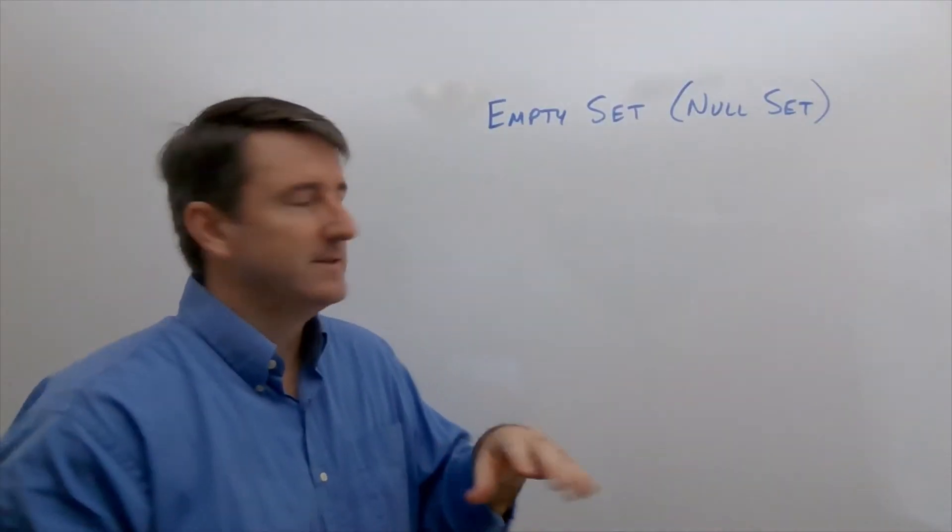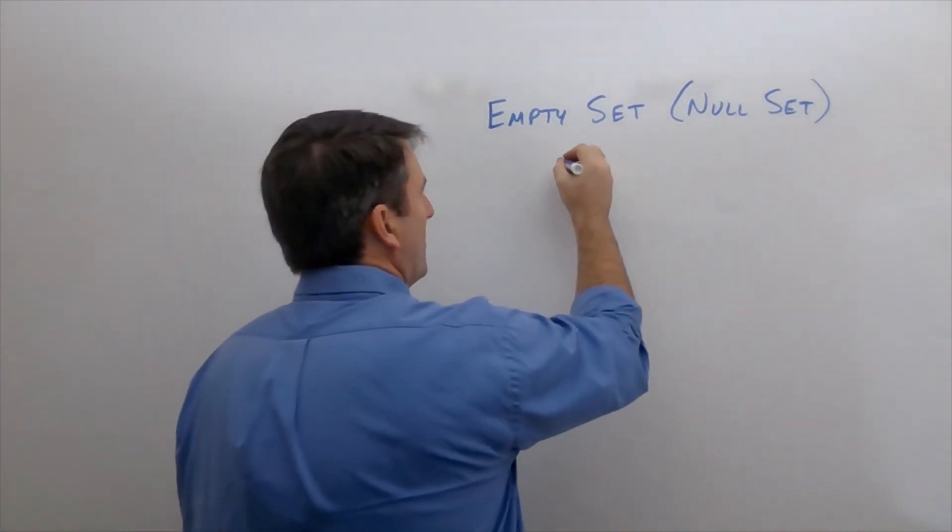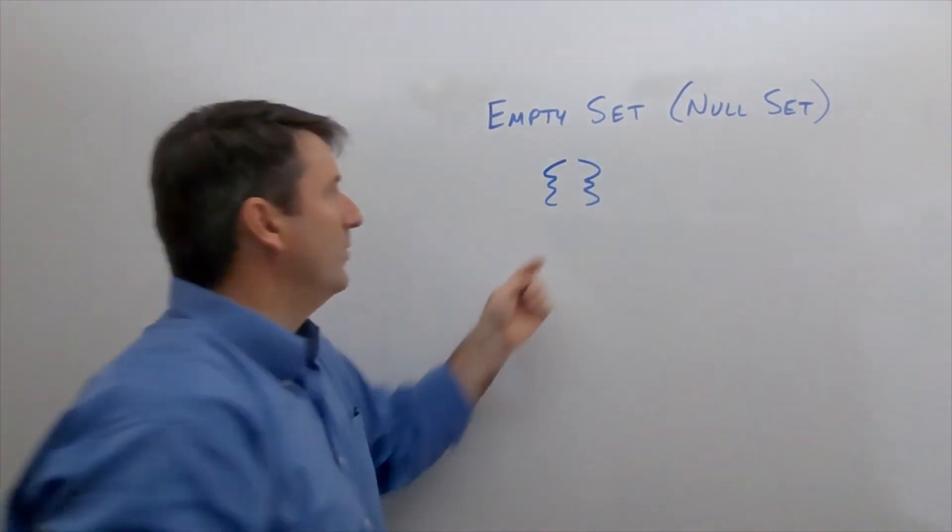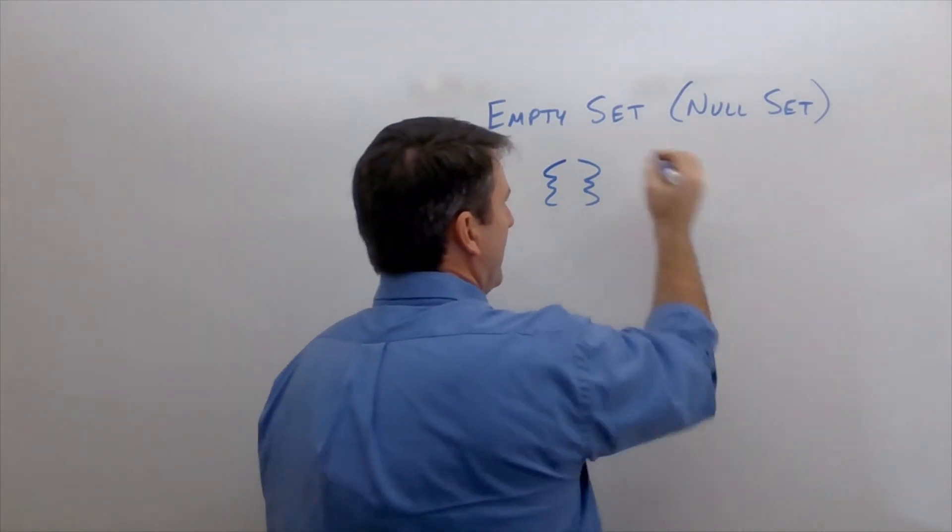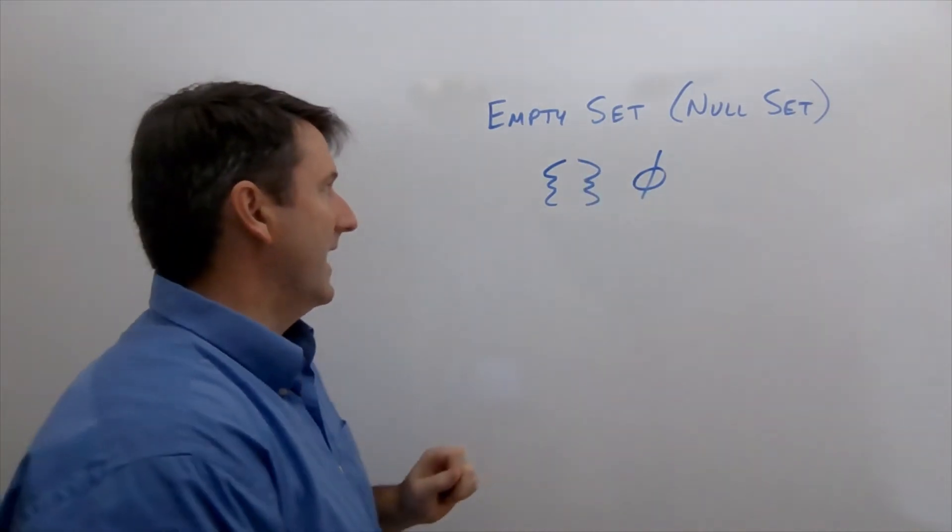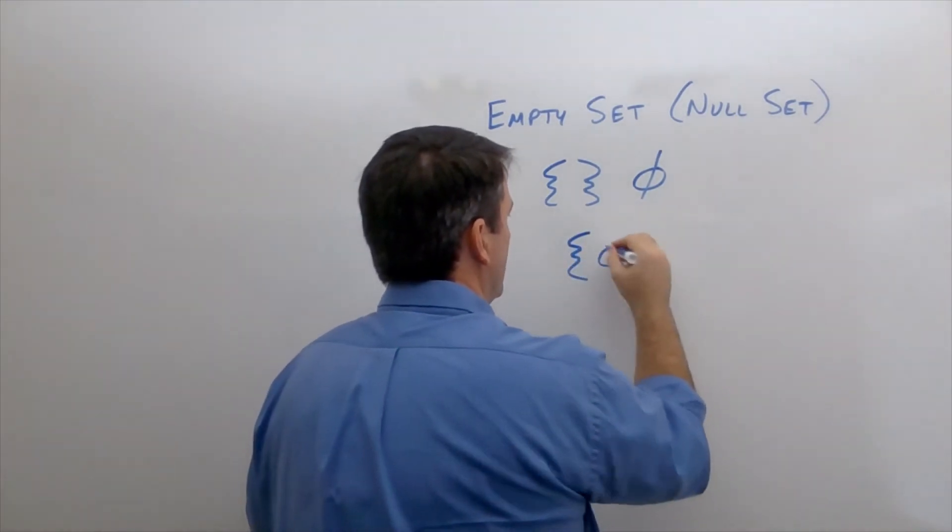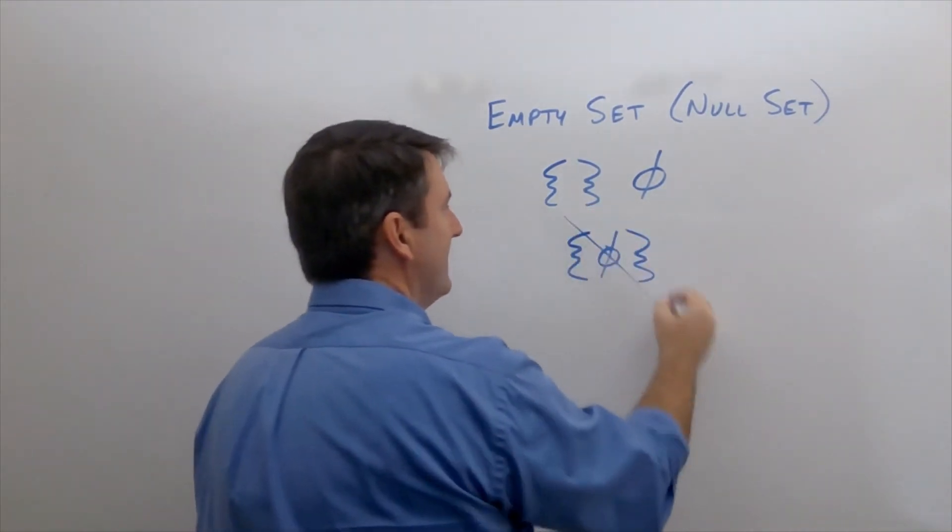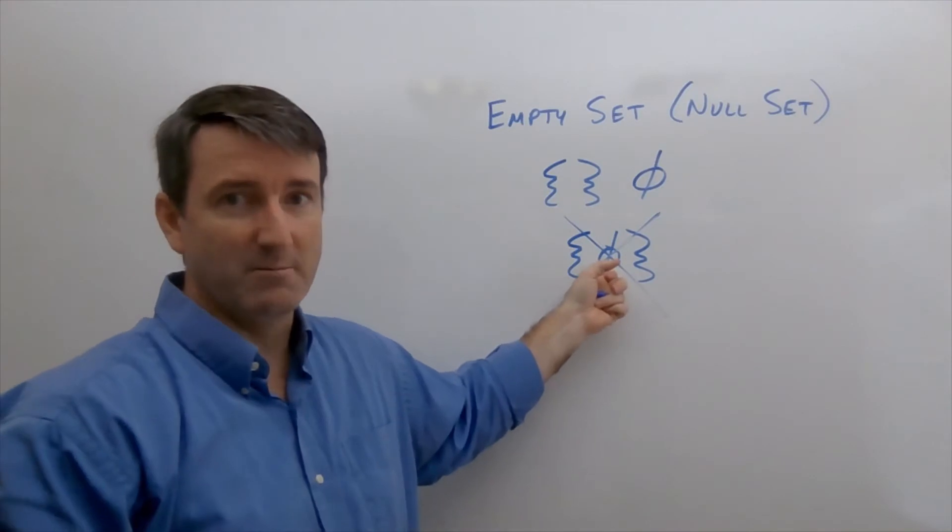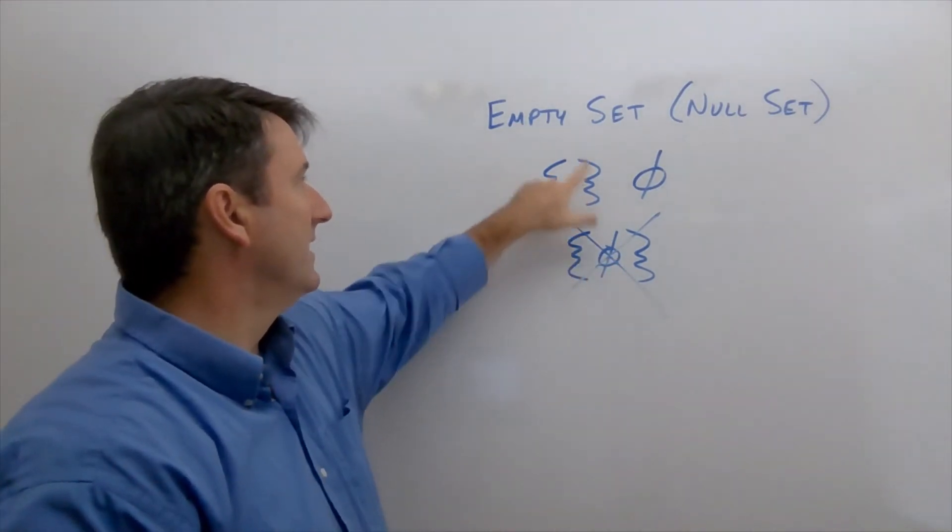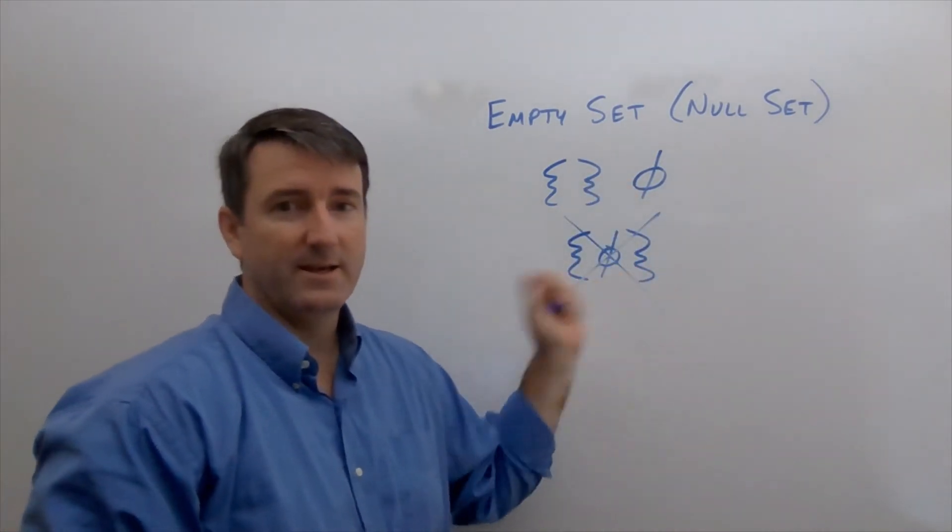One note on the empty set. Sometimes it's referred to as the null set. And although in this class we will indicate the empty set with a pair of braces with nothing in between them, sometimes you'll see the empty set indicated with this symbol: a zero with a line through it. But one thing you can't do is put braces with that symbol in between it. This does not mean the empty set. This is the set that includes that symbol. So the empty set is either going to be the braces with nothing in between or this circle with a line through it. But not this.